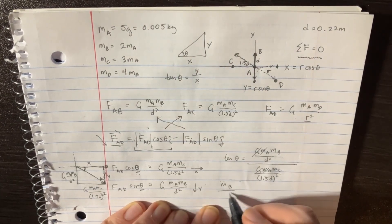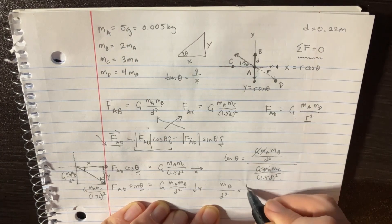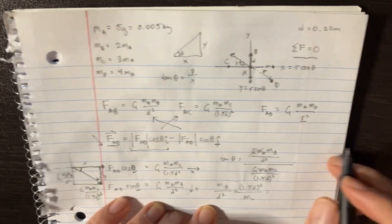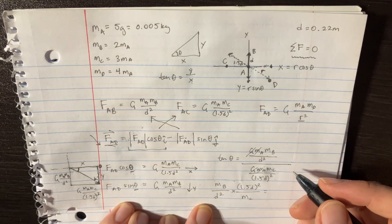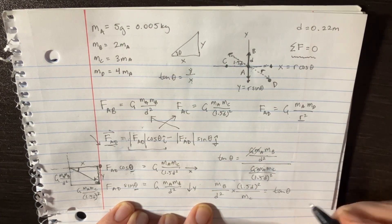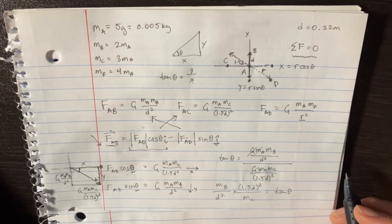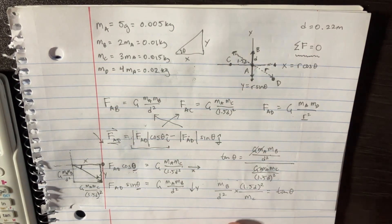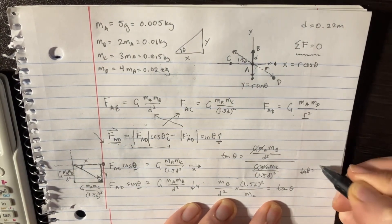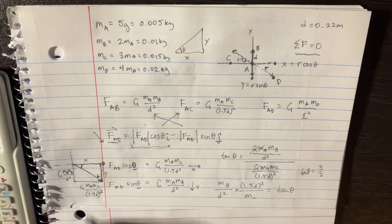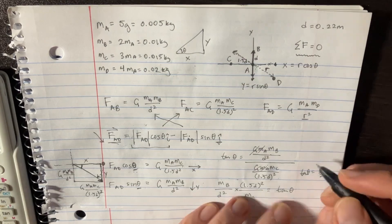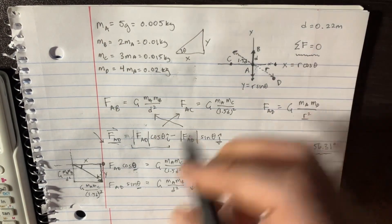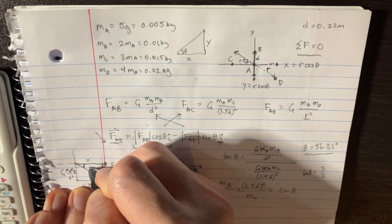After canceling G's and M_A, we're left with MB over D squared times 1.5D squared over MC, which gives us tan theta equals MB times 1.5 over MC. Plugging in the values, tan theta equals 3 over 2, so theta equals arctan(3/2), which is 56.31 degrees — and of course that's going to be the negative direction.